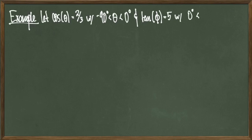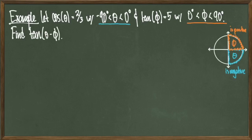In our next example, let cosine of theta equal 2 over 3, with theta between negative 90 degrees and 0 degrees, and let tangent of phi equal 5, where 0 is less than phi is less than 90 degrees. Drawing this on the unit circle, we have a negative angle theta in the fourth quadrant and a positive angle phi in the first quadrant. The goal is to find tangent of theta minus phi. Since we're evaluating tangent at a difference, we'll use the tangent difference formula, but we have a little work to do first.